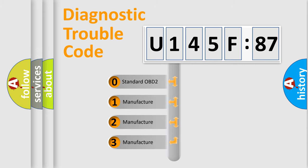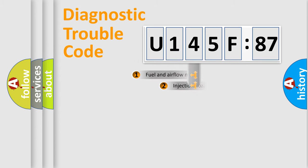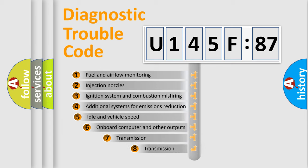If the second character is expressed as zero, it is a standardized error. In the case of numbers 1, 2, or 3, it is a more prestigious expression of the car-specific error.